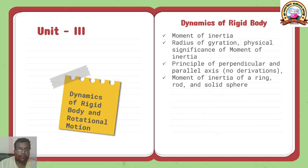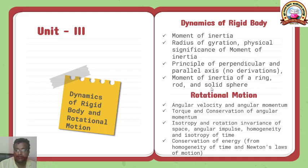In subsequent Unit 3, we will see the dynamics of rigid body, where we will start with moment of inertia, then radius of gyration, physical significance of moment of inertia, principle of perpendicular and parallel axis, and at last moment of inertia for ring, rod and solid sphere. In the second part, we will focus on rotational motion, where we will see angular velocity and angular momentum, torque and conservation of angular momentum, isotropy, rotation invariance in space, angular impulse, homogeneity and isotropy of time, conservation of energy, specially homogeneity of time and Newton's law of motion.